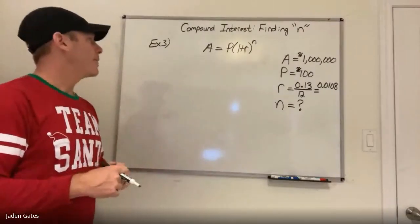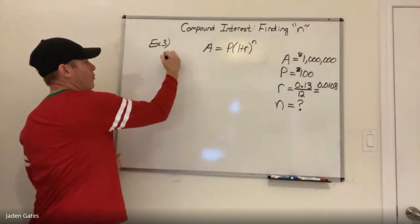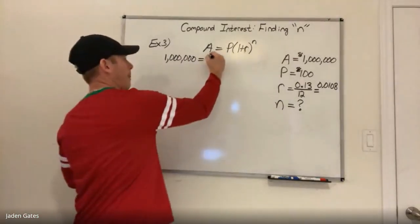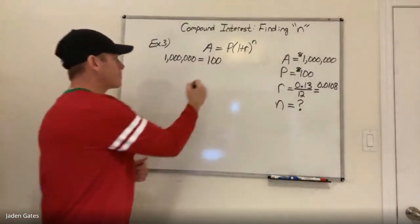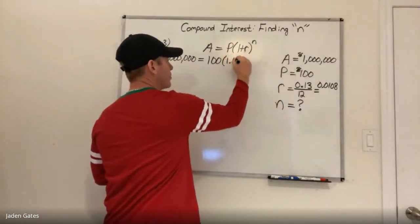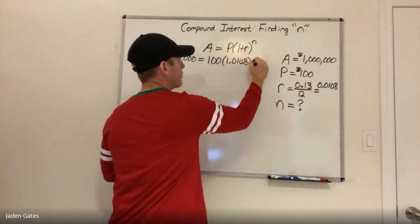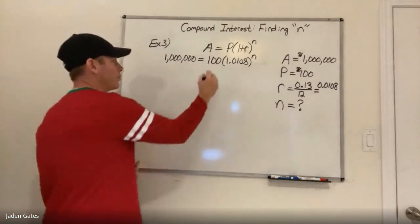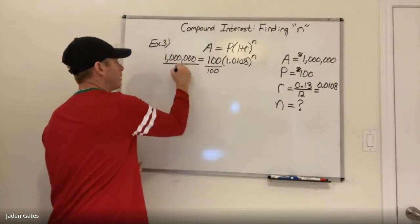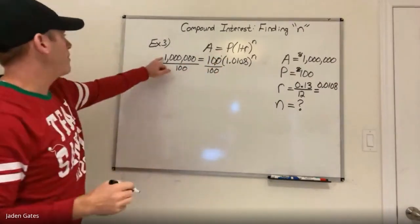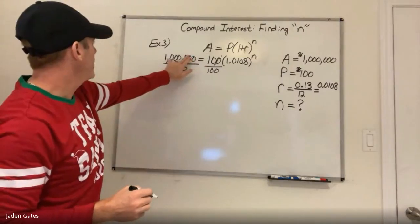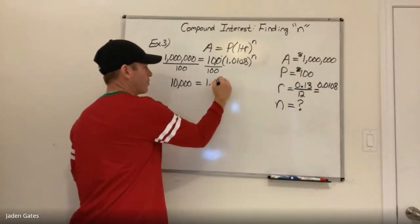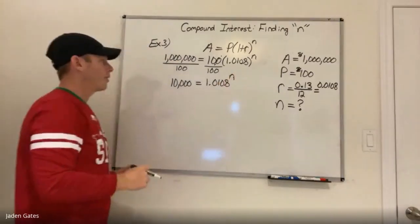Setting up with other compounding periods is a little different. Substituting: 1,000,000 = 100(1.0108)^n. I need to get rid of the 100 first — divide both sides by 100. 1,000,000 ÷ 100 = 10,000. So now I have 10,000 = 1.0108^n.